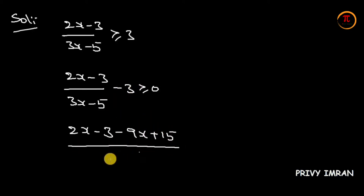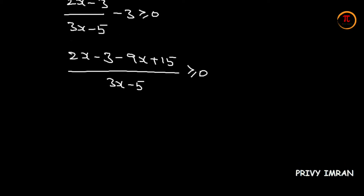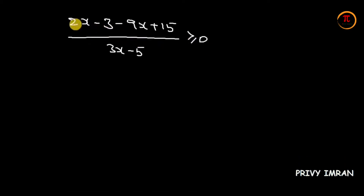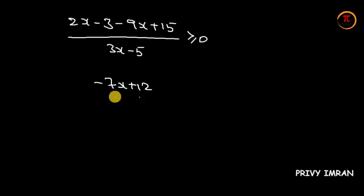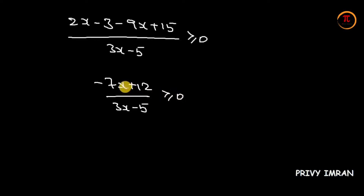The whole expression divided by (3x minus 5) is greater than or equal to 0. Now, 2x minus 9x equals minus 7x, and minus 3 plus 15 equals plus 12. So we have (minus 7x plus 12) divided by (3x minus 5) greater than or equal to 0.